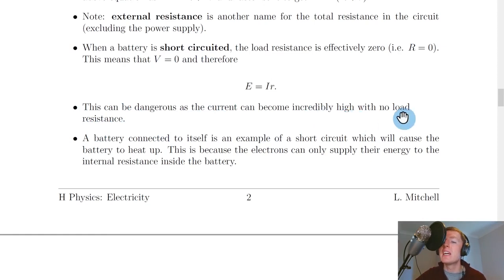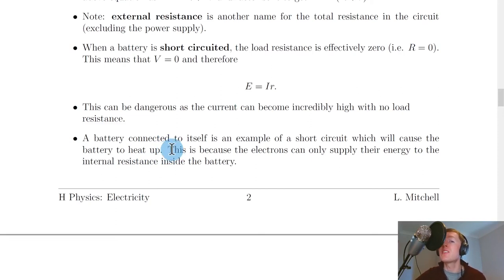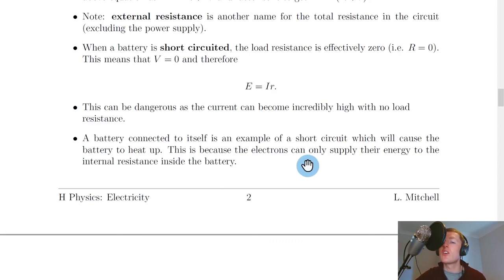A battery being short-circuited can be dangerous because the current can become incredibly high with no load resistance. Connecting one terminal of a battery directly to the other with a wire is an example of a short circuit. The battery heats up because electrons can only supply their energy to the internal resistance inside the battery — there's nowhere else for the energy to go, so it heats up that internal resistor.